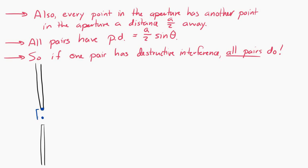If two points that are a distance a over 2 apart have destructive interference, then every pair of points that are a distance a over 2 apart have destructive interference over there on the screen.